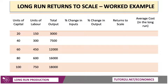Here's a quick example. The firm has a quantity of capital on the left-hand side, units of labour, and we're given a table showing the total output results. You can work out the percentage change in inputs as we go through — doubling from 20 to 40 is a 100% change, from 40 to 60 is a 50% change, and so on. We're adding 20 units of capital in each row, although the percentage change in inputs is falling because the denominator is getting bigger.